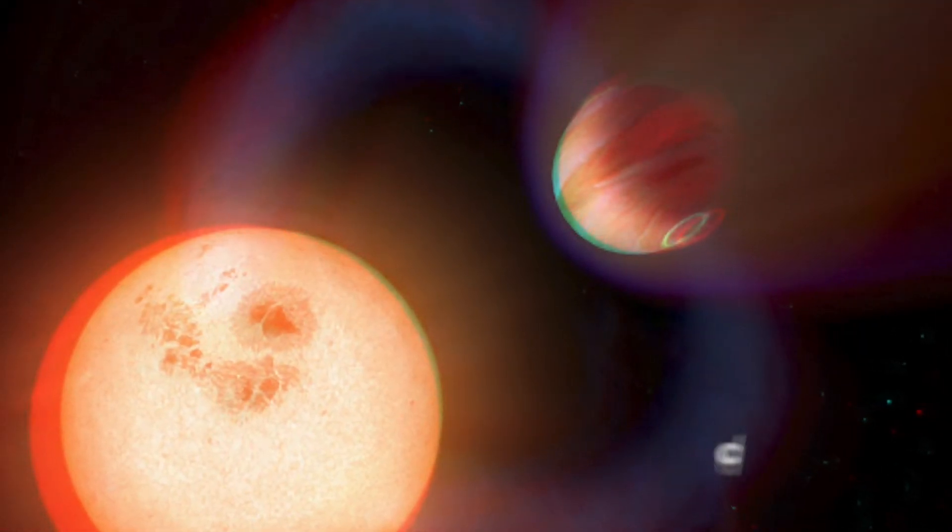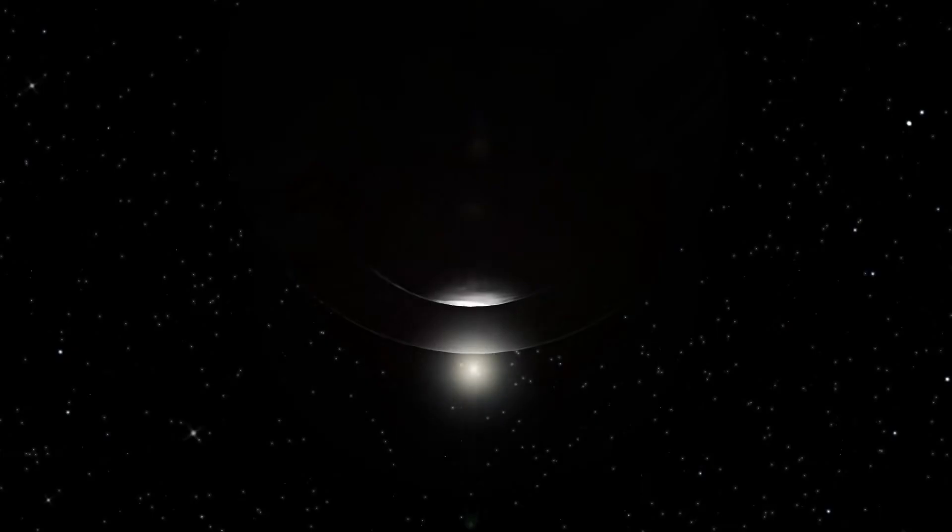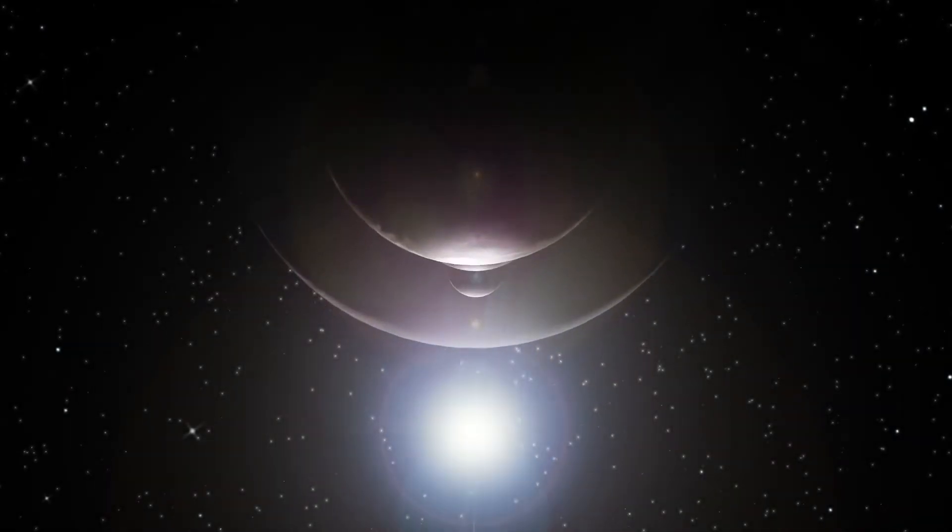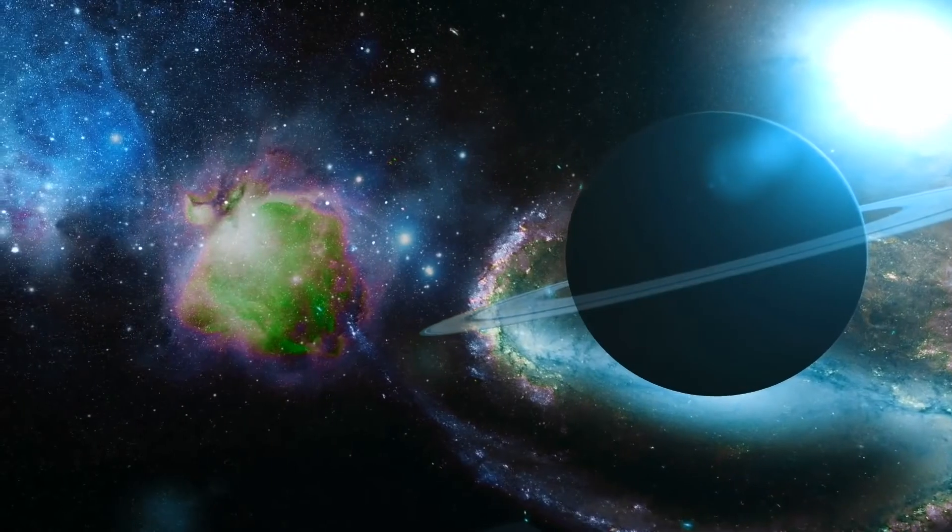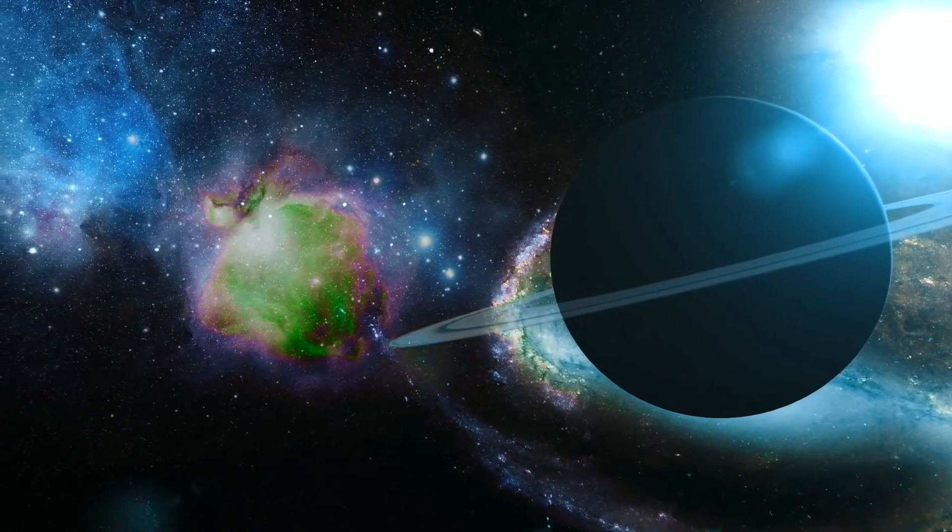So our exoplanet detection methods are biased towards finding Hot Jupiters, large planets that orbit very close to their host stars. Still, that doesn't resolve the question of why they exist there in the first place.